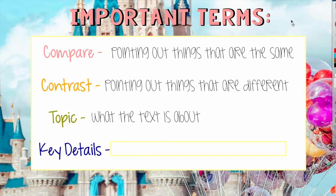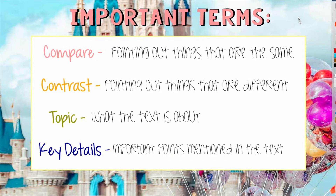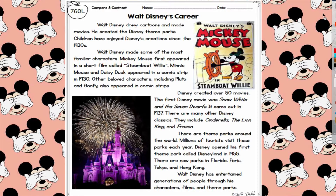The last term we're going to discuss is key details. Key details are important points mentioned in the text. In both texts they're going to be mentioning lots of different things, and it's our job as the reader to find which pieces of information are the most important. Now let's get started on reading our first text. I'm going to read both texts back to back and then we'll go back and point out the differences and similarities to fill out our Venn diagram.